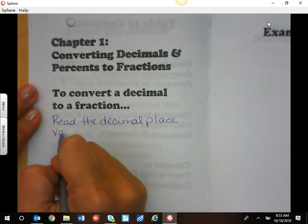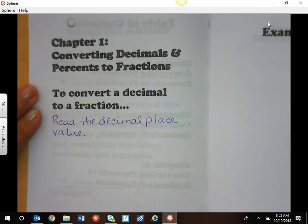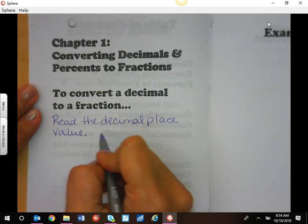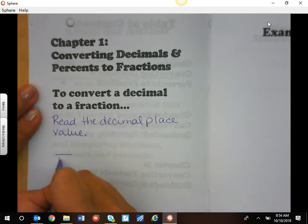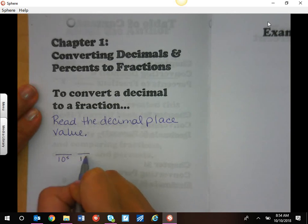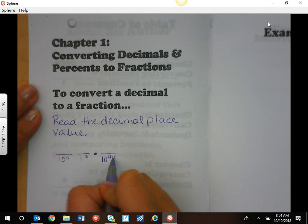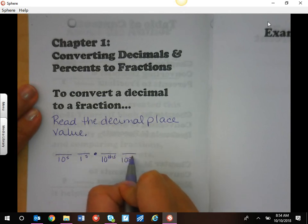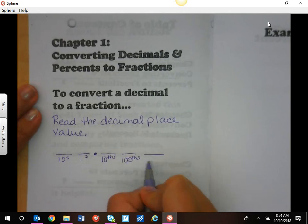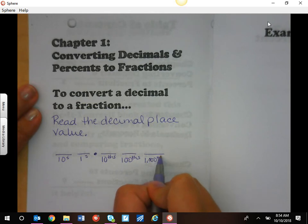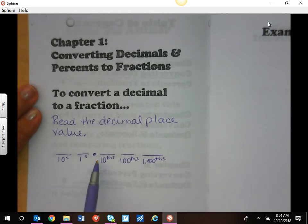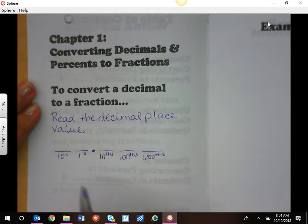Some of you have already done this in class and you're quite good at it. Remember we have the tens place, we have the ones place, and after our decimal we have the tenths, the hundredths, the thousandths, and so on. We need to make sure that we read it correctly.